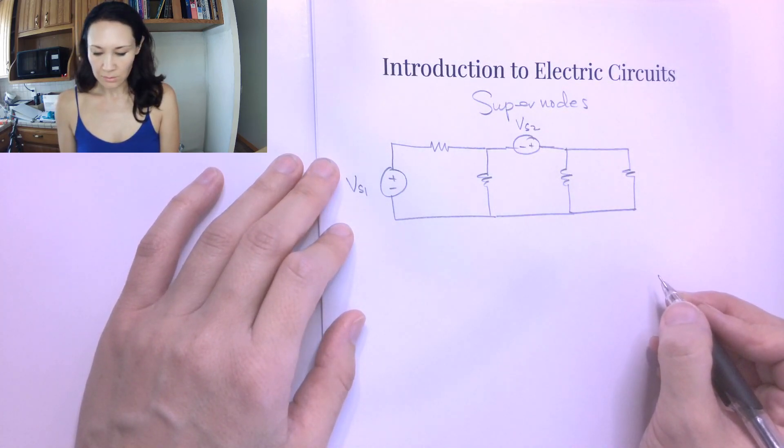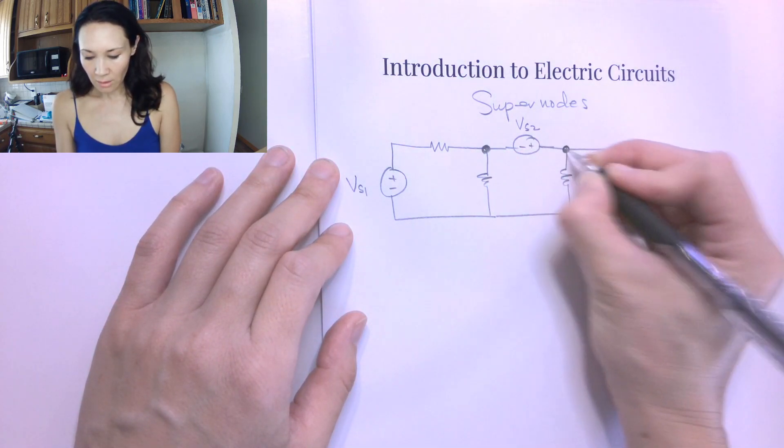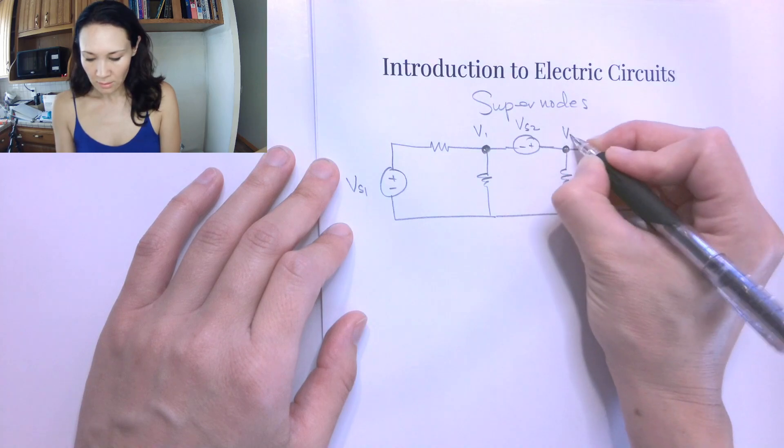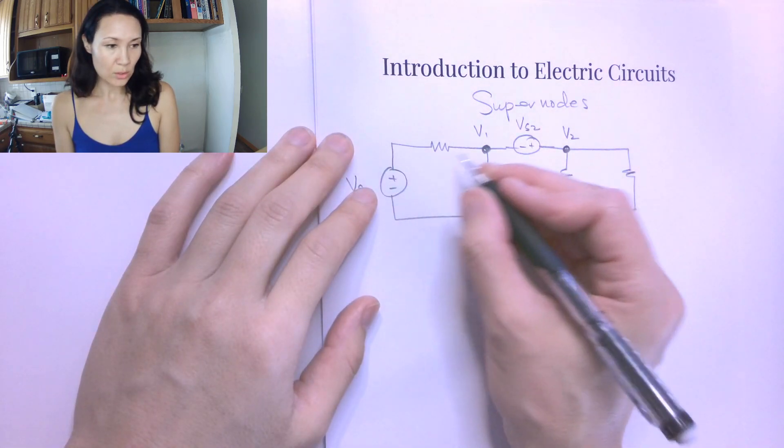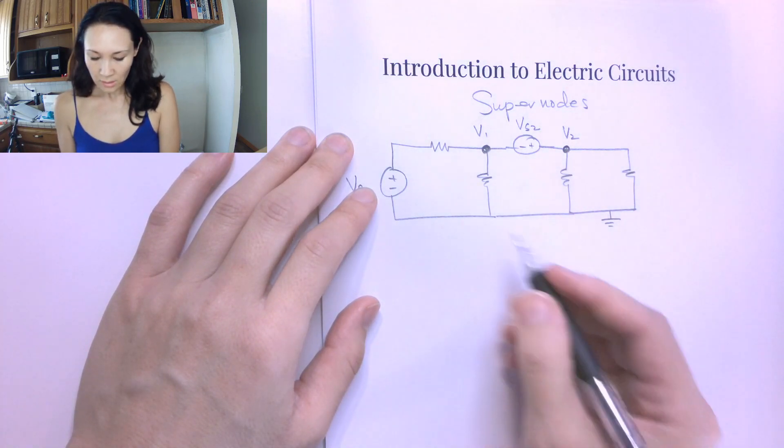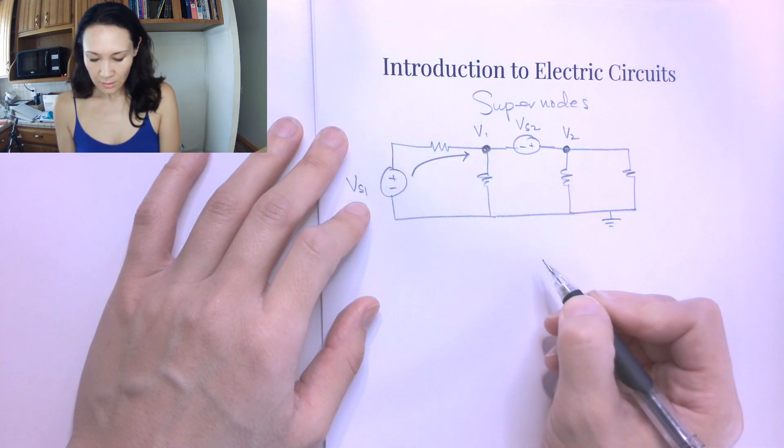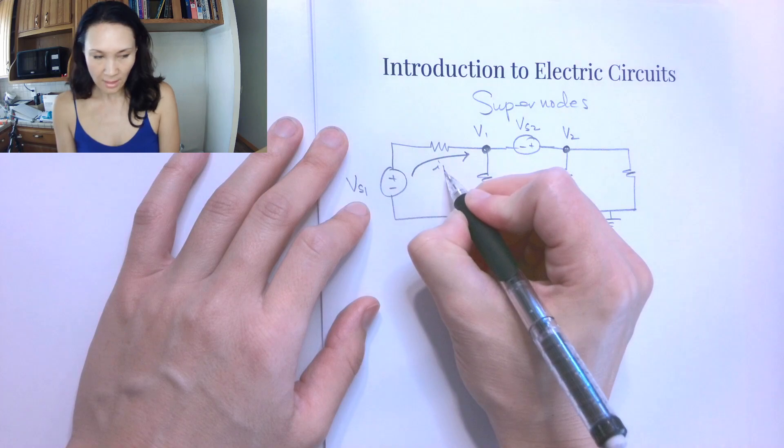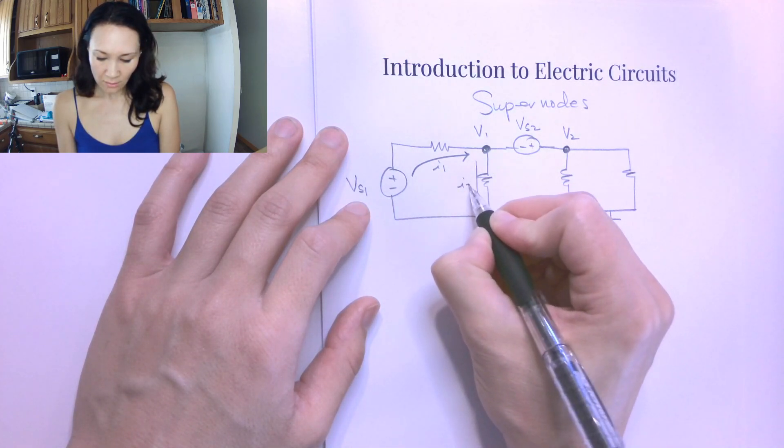You guys know from the steps of the node voltage method, the first thing was we go through and we label all the nodes, V1, V2, and then we use KCL to write equations for the currents at all the nodes. We designate our reference node. If we have a current coming in here to this node, I can label this I1. We're going to have a current that takes a path down this resistor. I'll call this I2.